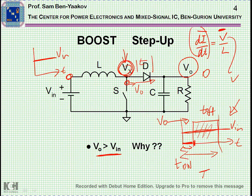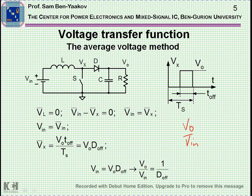Otherwise there'd be no way to equalize these two averages. This implies that the boost is a step-up converter that is useful when you want to get voltages which are higher than V in. Now, what about the expression for V out over V in — that is, the voltage gain? There are two ways to do the calculation. I'm going to use the concept of an average voltage zero on the inductor.